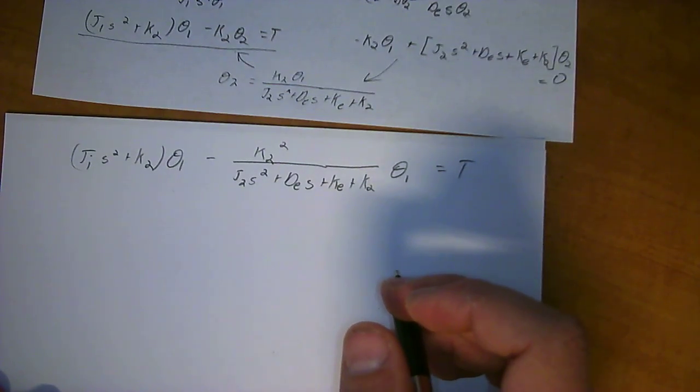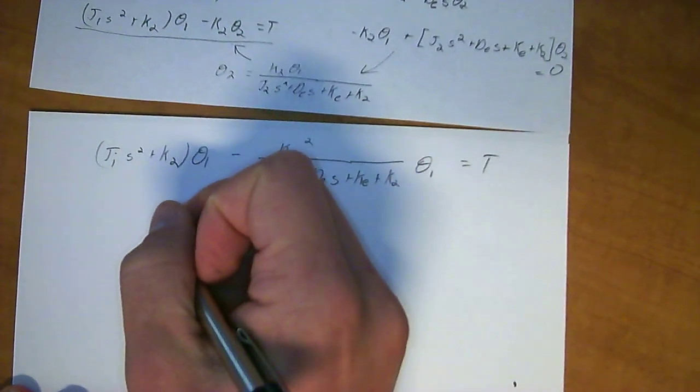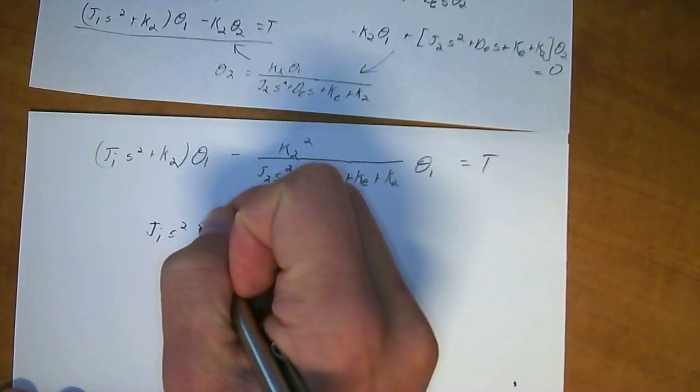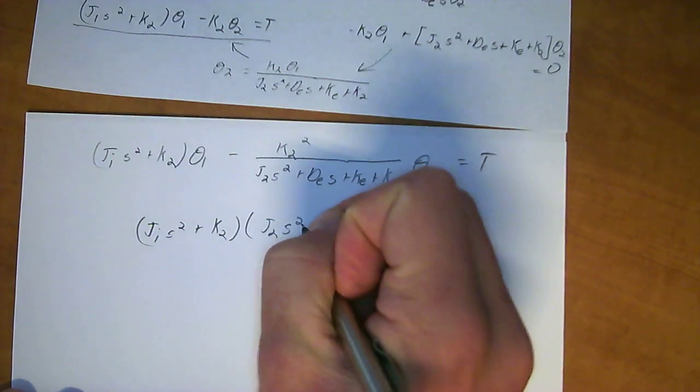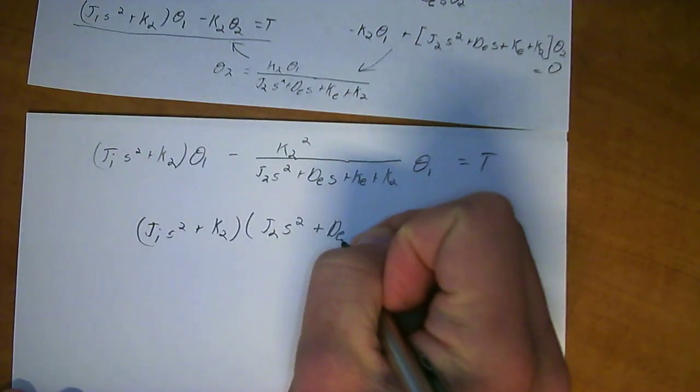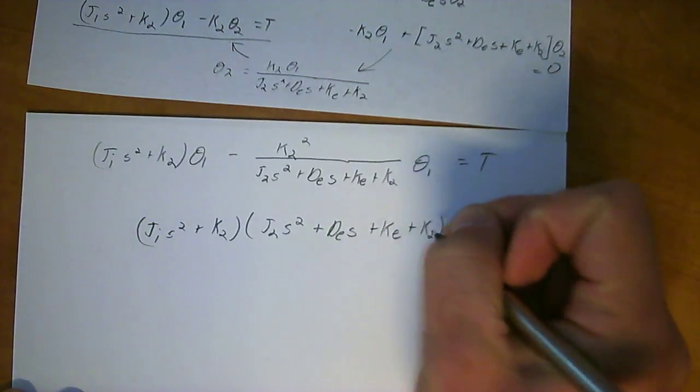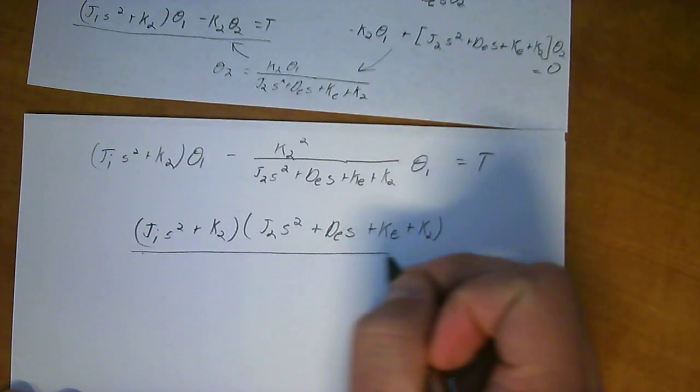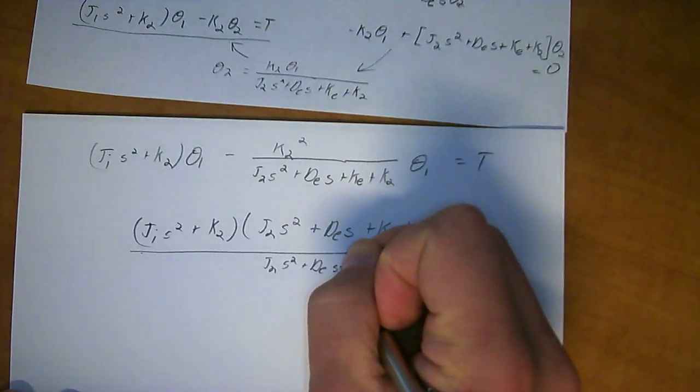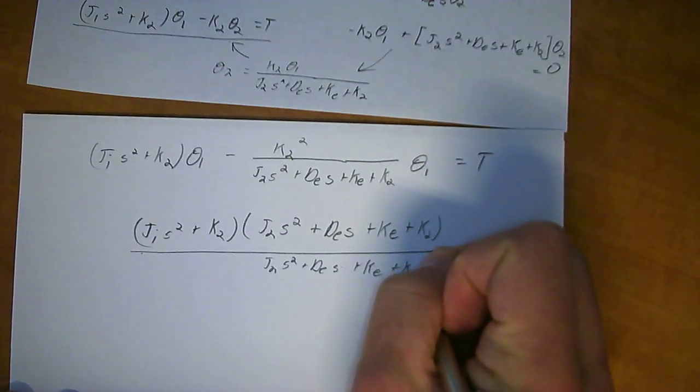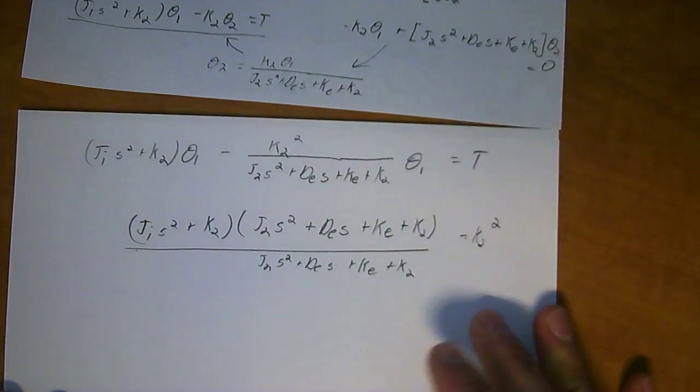So I'm actually going to skip some of the algebra steps and just move right on through here because it's just a lot of effort otherwise. Well, no, I'll show it. J1 S squared plus K2 times J2 S squared - all of this is algebra if you just want to go ahead and work it from here. The really hard control parts are over and the rest of this is just manipulating the equation so that it works. J2 S squared plus D E S plus KB plus K2, minus K2 squared.